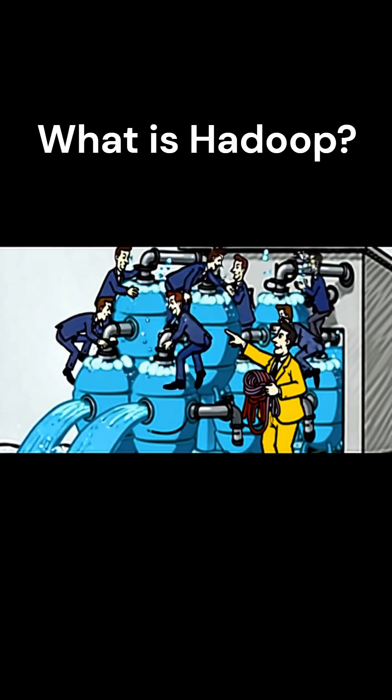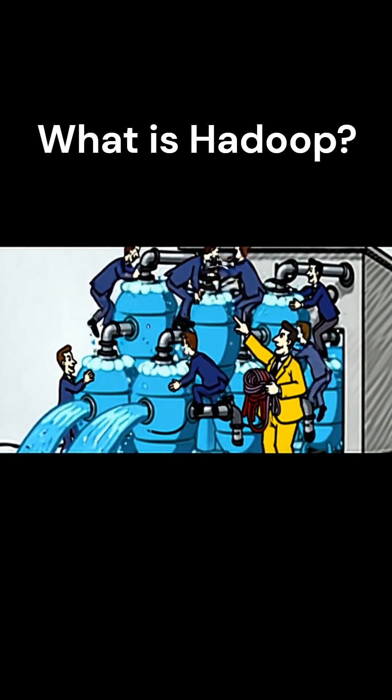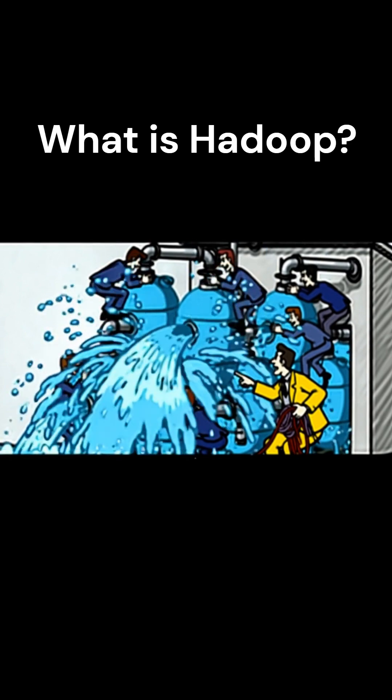If a machine fails, Yarn immediately reassigns the task to another machine that has the backup data.